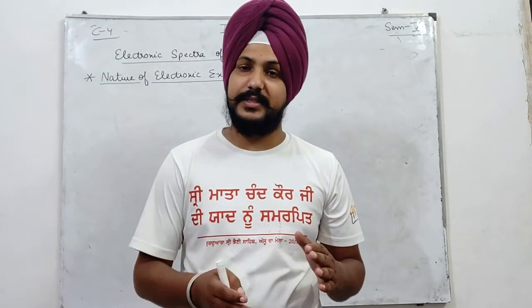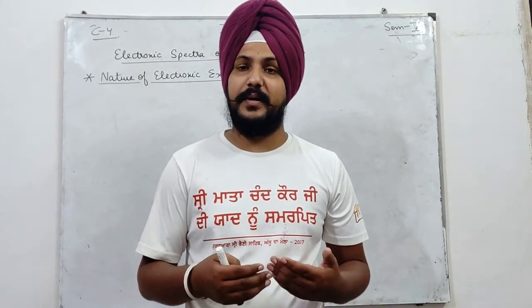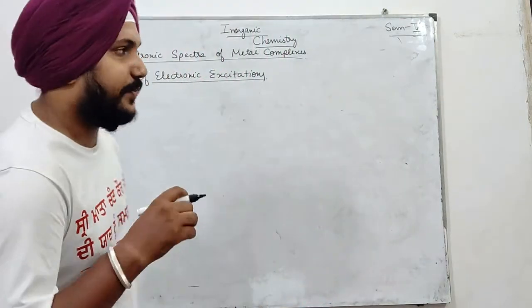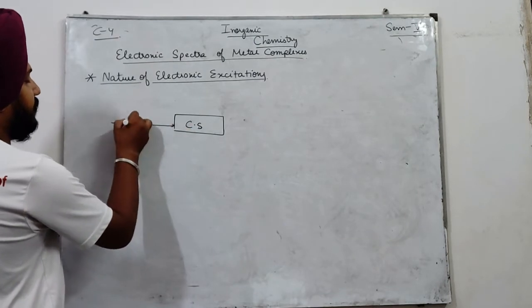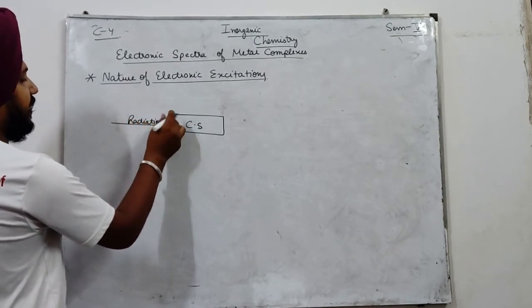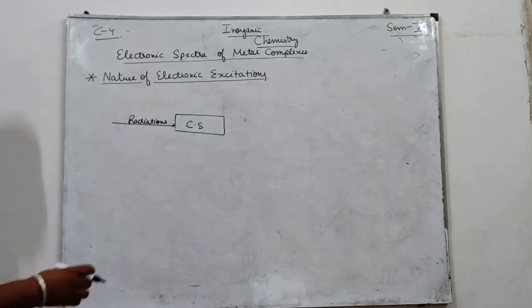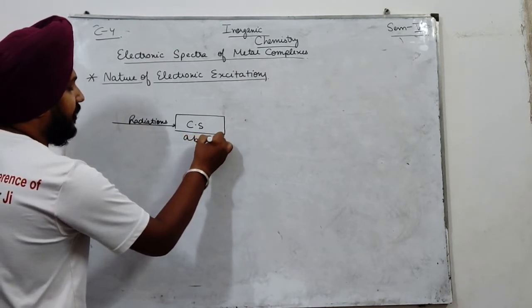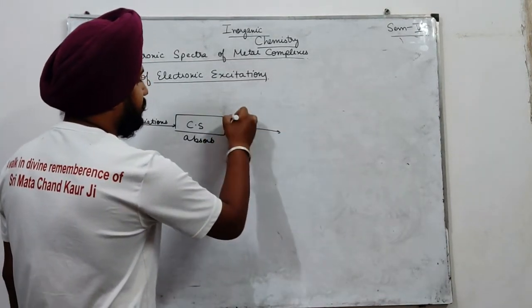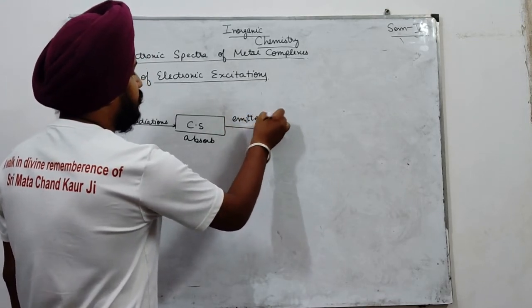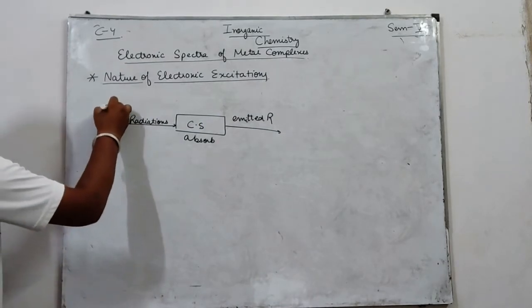I will tell you what kind of spectra we study, and when we learn spectra, I will explain what kind of energy levels allow electrons to shift from a lower level to a higher level. Suppose I have a chemical substance and I pass radiation through it.